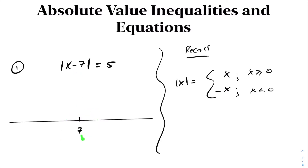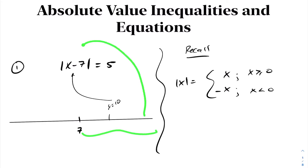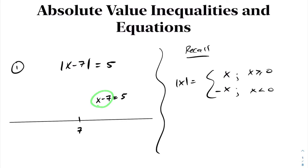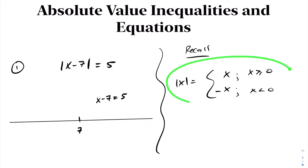So what we want to do now is pick a number in the interval greater than 7. Any number in this interval will be the absolute value of a positive number. Therefore, when we take the absolute value of it, we just have to drop the absolute value sign and everything else is left unchanged. So this becomes x minus 7 equals 5. I can drop that absolute value sign because any value I choose in this interval will end up being the absolute value of a positive expression. Therefore, by definition of absolute value, we can drop that absolute value sign.